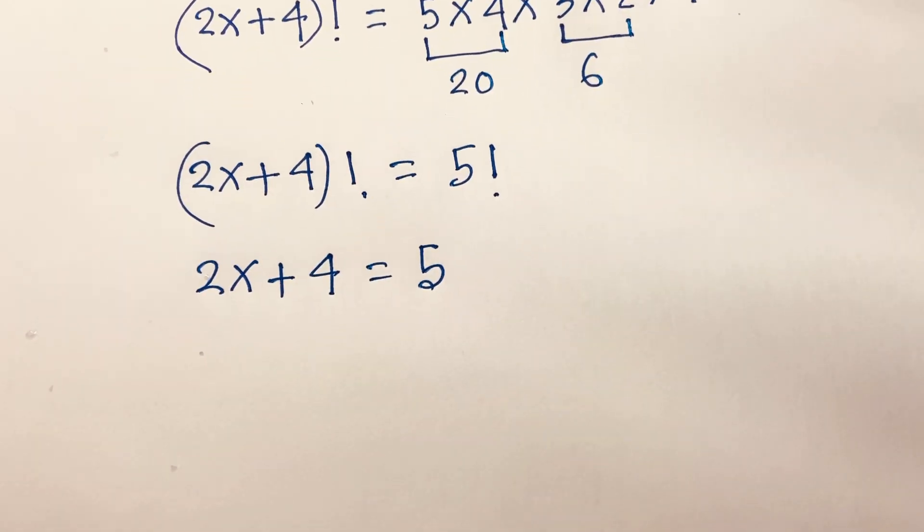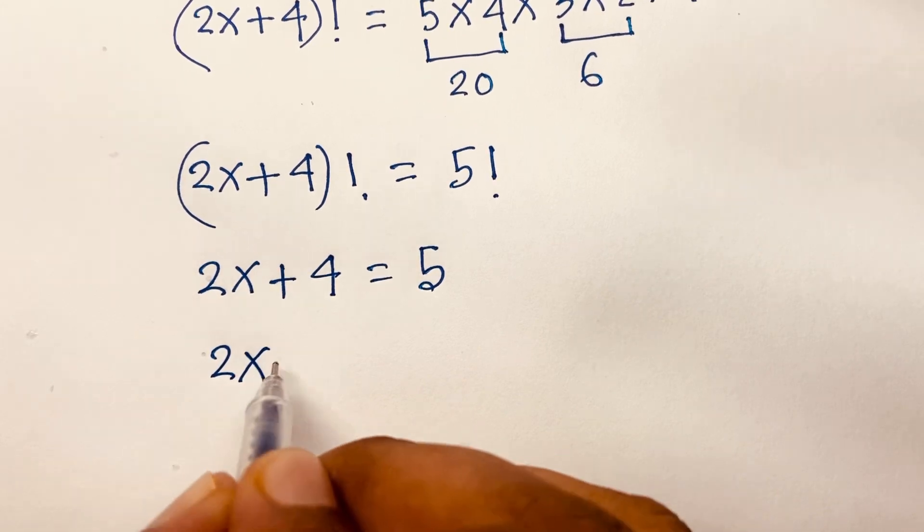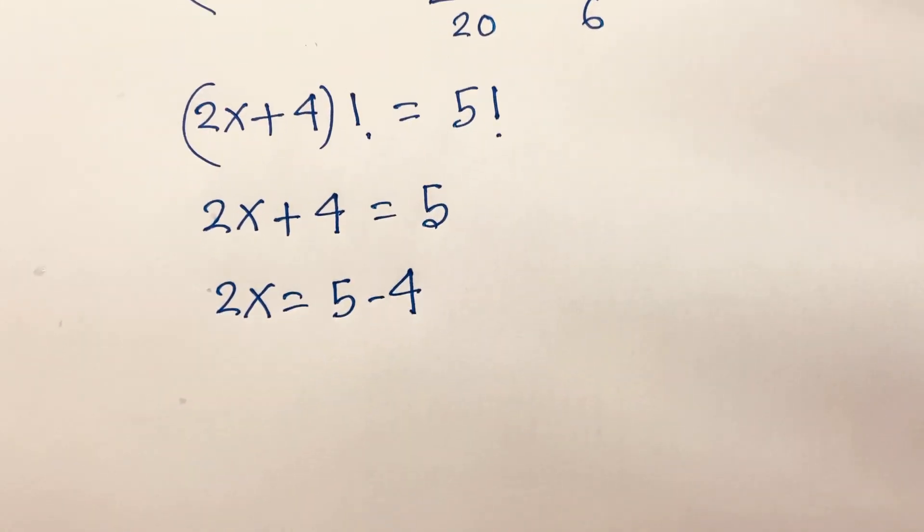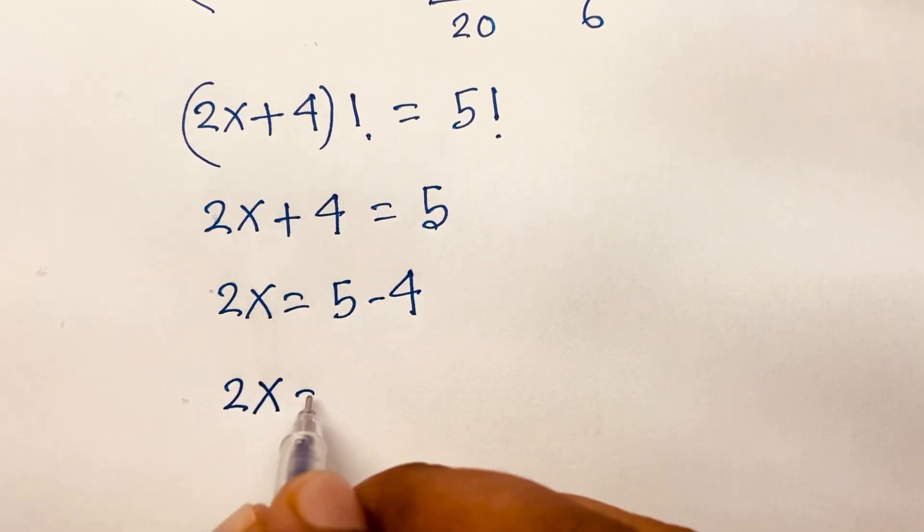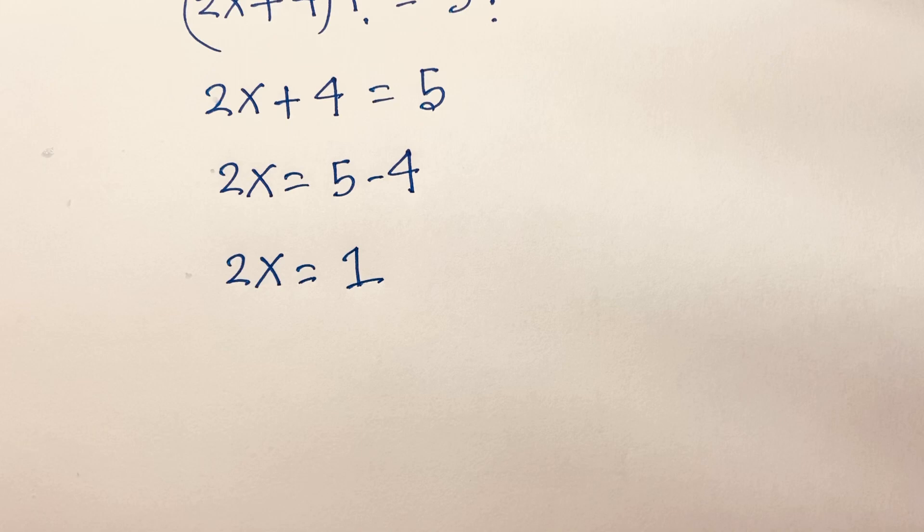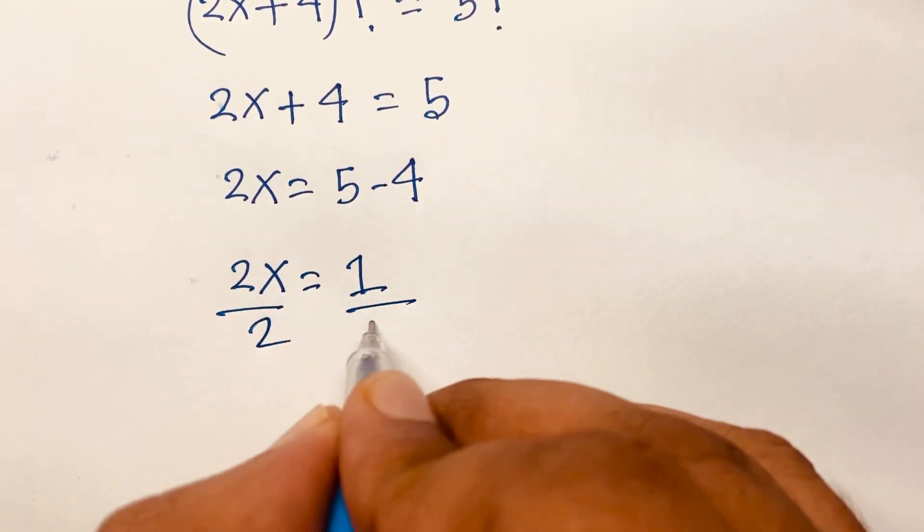Then 2x equals 5 minus 4, so 2x equals 1. If I divide both sides by 2, the 2s cancel and we find x.